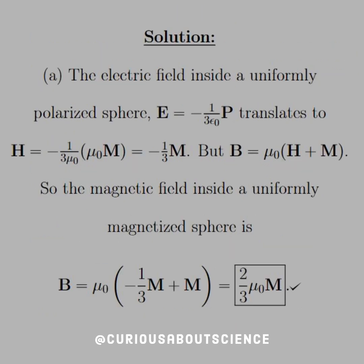For part A, we want the field inside the sphere. We know the electric field inside a uniformly polarized sphere is equal to negative 1 over 3ε₀ times P. So if we translate this, we have H equals negative 1 over 3μ₀ times μ₀M, which simplifies to negative one-third M. Similarly, solving for B gives μ₀(H + M), and plugging everything together we get a final field of two-thirds μ₀M, which is exactly what we expect.